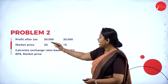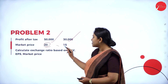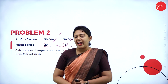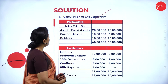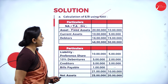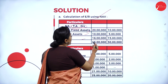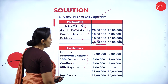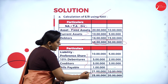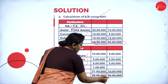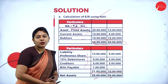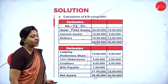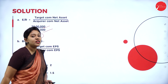Profit after tax is given: 50,000 and 30,000. Market price is also directly given. We need to calculate exchange ratio based on net assets valuation method, EPS method, and market price. Net assets equals total assets minus total liabilities. Total assets include fixed assets, current assets, and debtors. Total liabilities include preference shares, debentures, creditors, and bills payable. Subtracting gives net assets of 25 lakh for ABC and 20 lakh for XYZ. Target company (XYZ) net assets 20 lakh divided by acquirer (ABC) 25 lakh gives exchange ratio of 0.8.